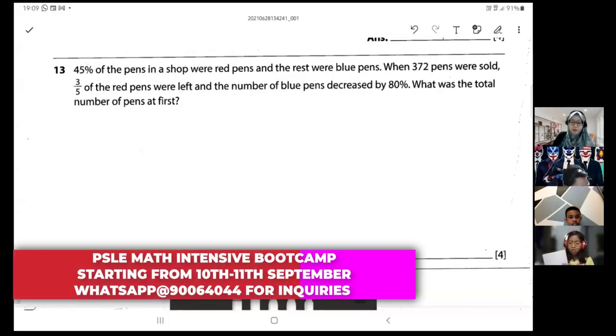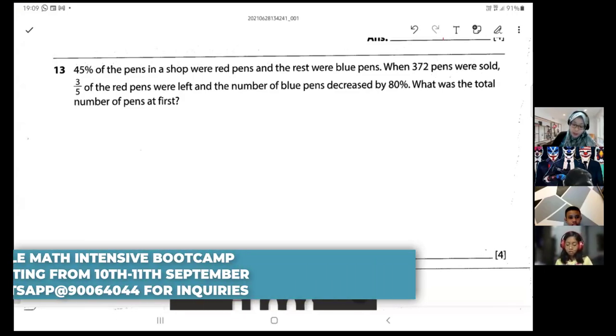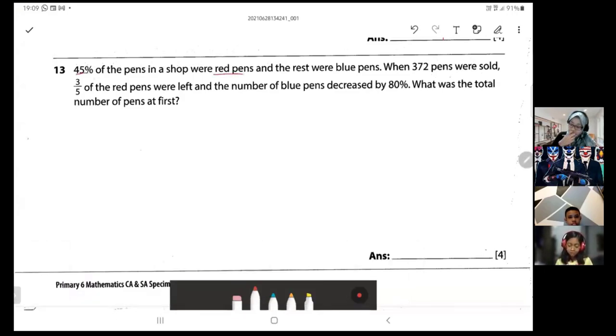Okay, so 45 percent of the pens in a shop were red pens and the rest were blue pens. From here you know the blue pens is how many? You can actually find out by checking 100 percent minus 45 percent, which equals 55 percent blue pens.